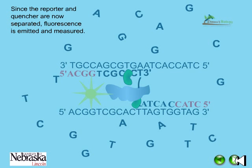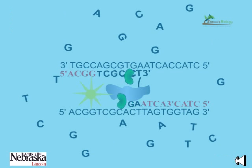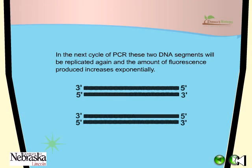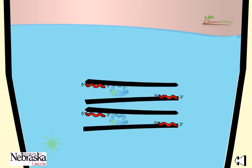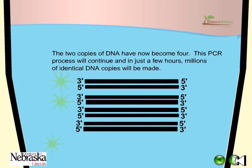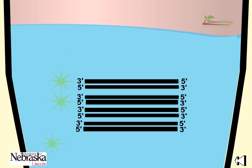Since the reporter and quencher are now separated, fluorescence is emitted and measured. In the next cycles of PCR, these DNA segments will be replicated again and the amount of fluorescence produced increases exponentially. The two copies of DNA have now become four, and this PCR process will continue until in a few hours millions of identical DNA copies will be made.